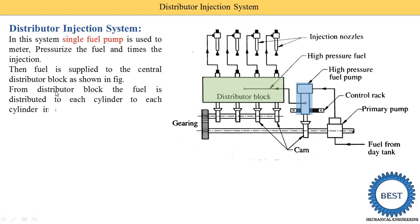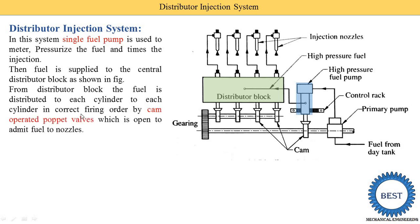From the distributor block, the fuel is distributed to each cylinder in the correct firing order. Firing order means combustion does not start in every cylinder at the same time — for example, in a four-cylinder engine it could be one, four, three, two. The fuel distribution is controlled by cam-operated poppet valves which open to admit fuel to the nozzles. You can see cylinder one, cylinder two, cylinder three, and cylinder four, each with their own injection nozzle.